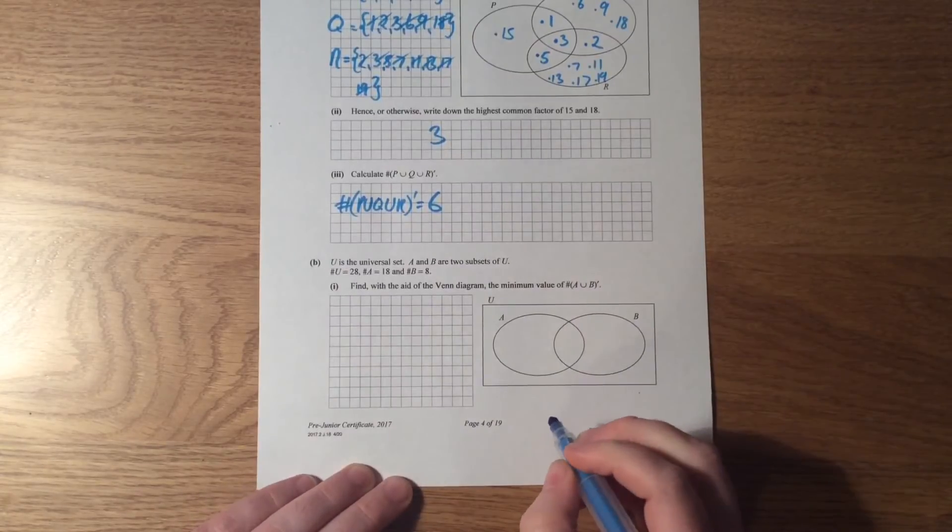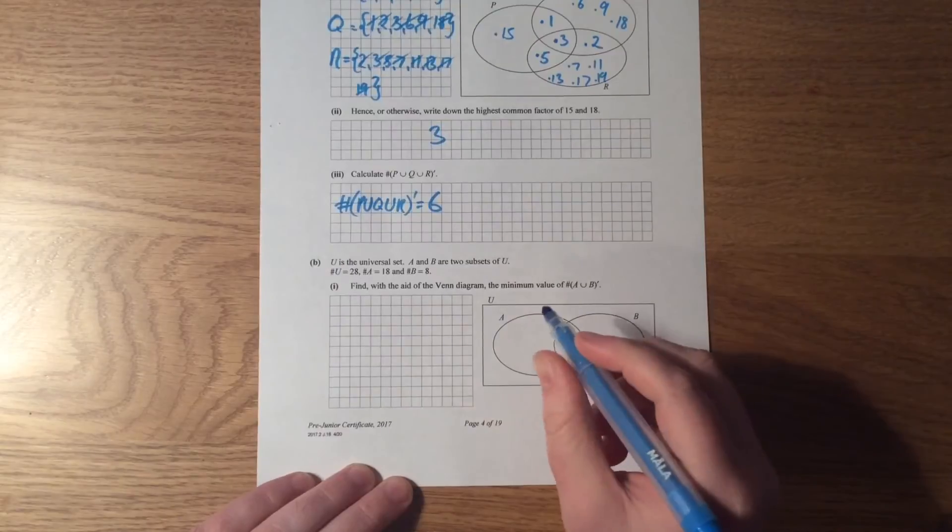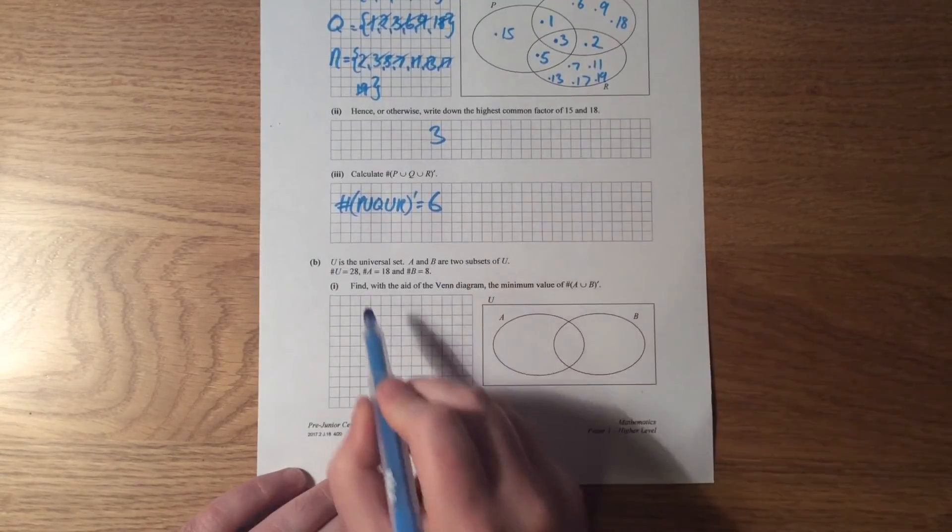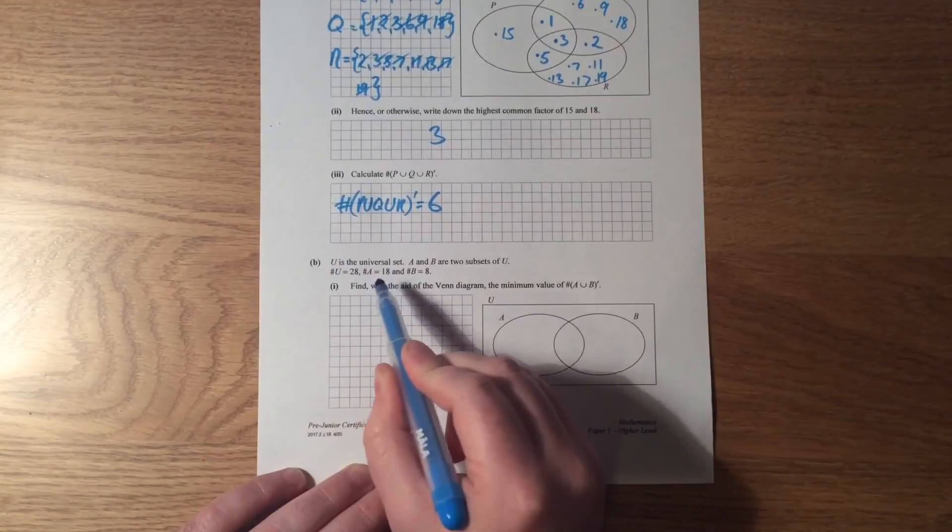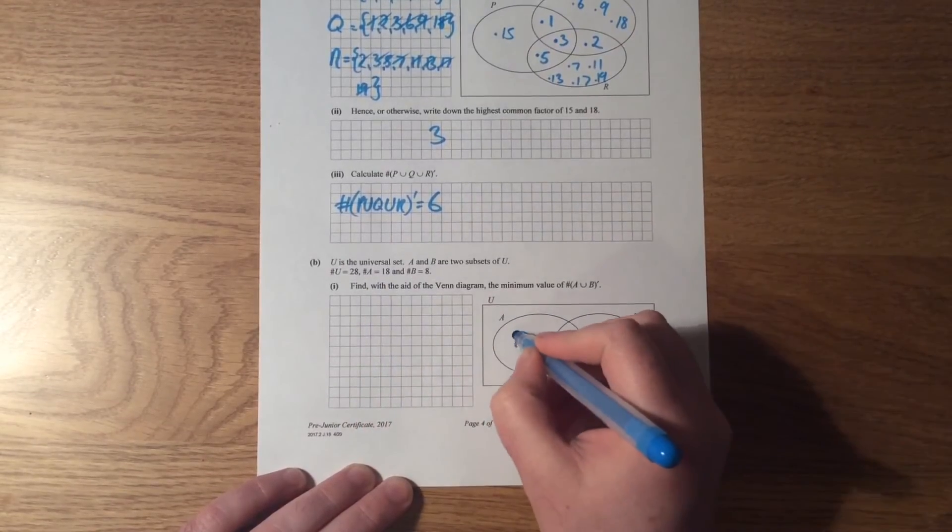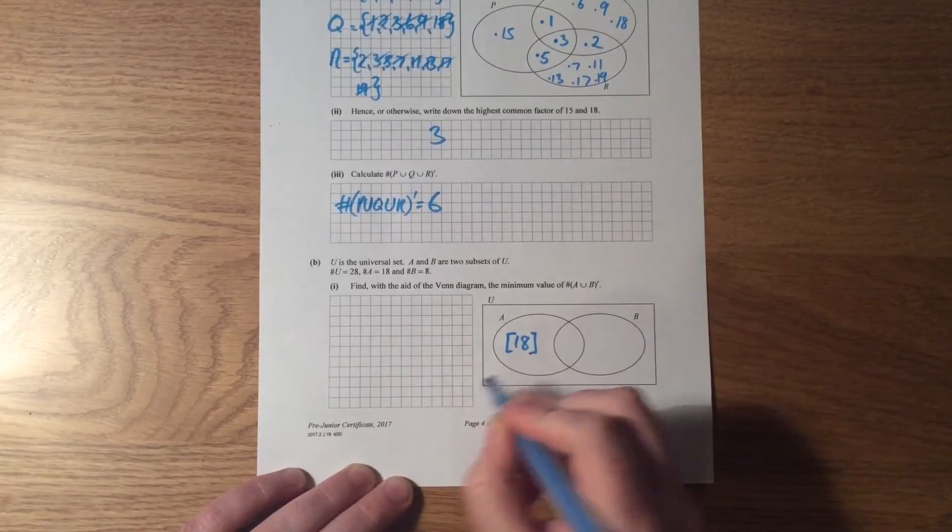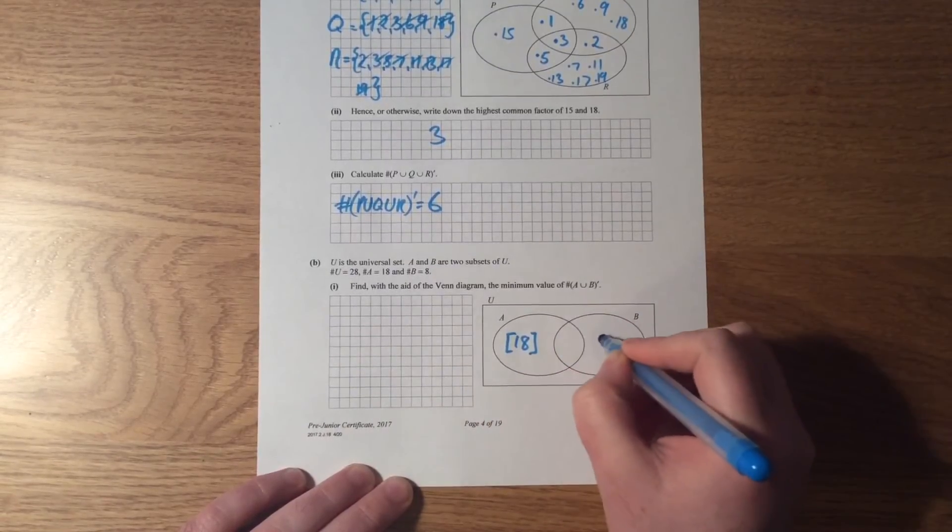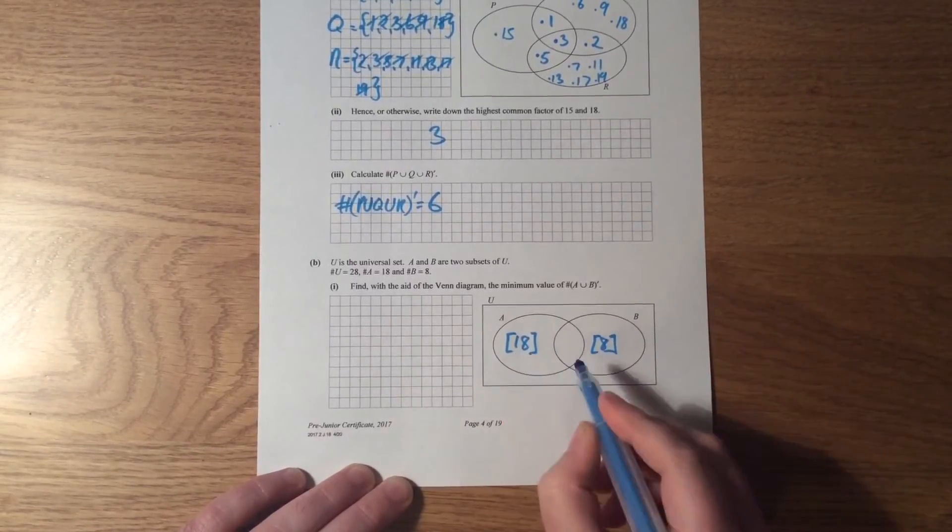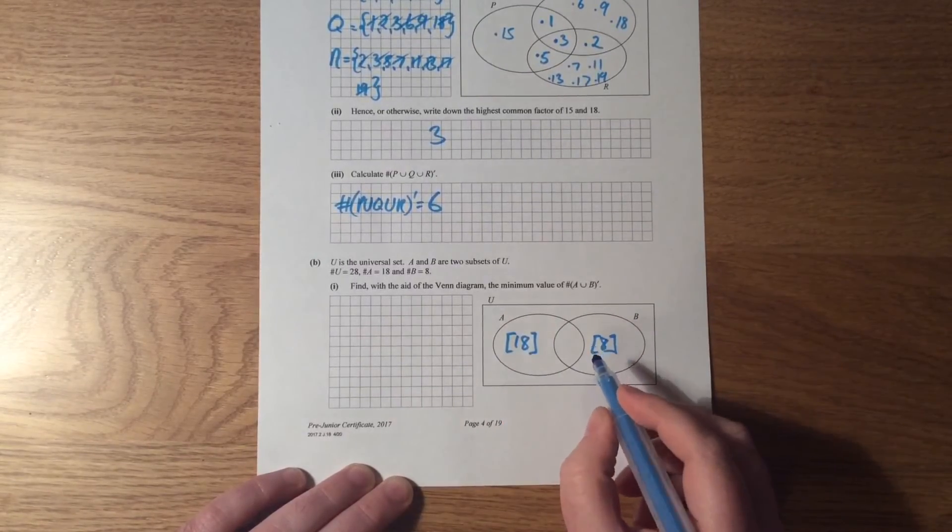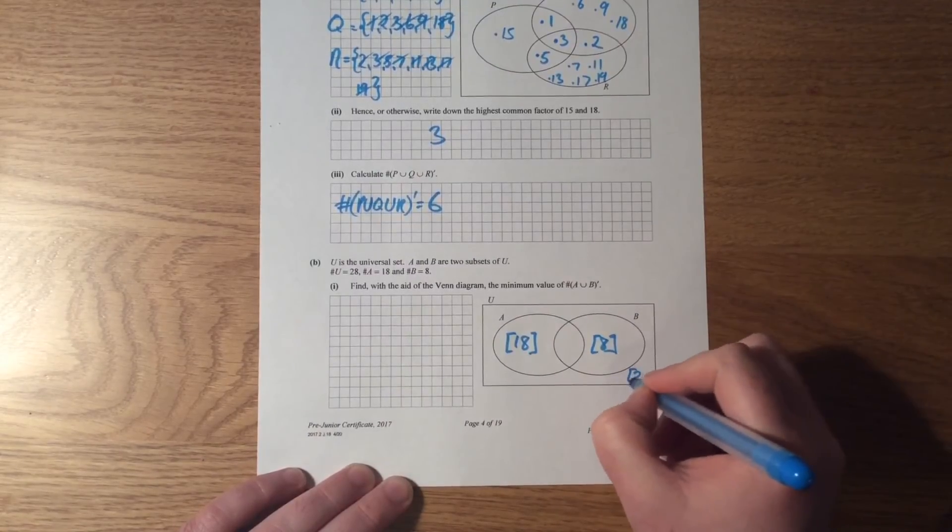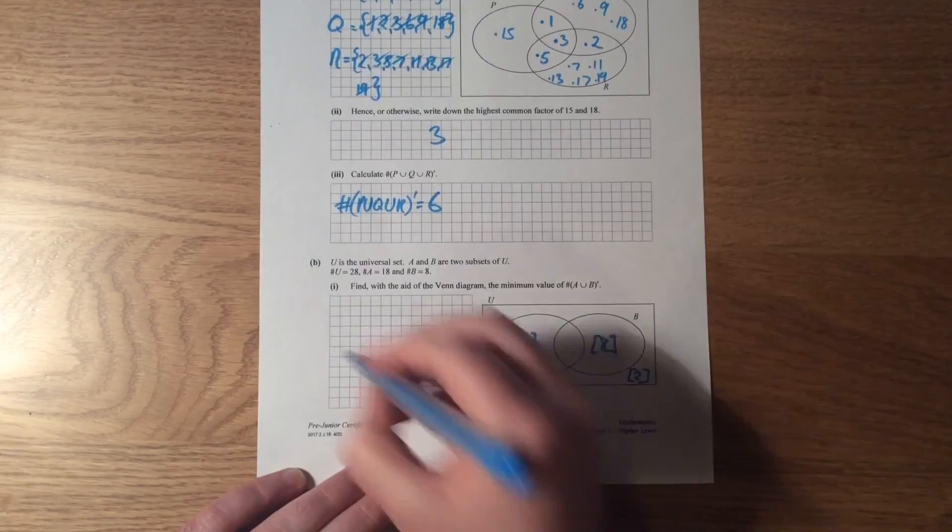Okay, find with the aid of a Venn diagram the minimum value of A union B complement. So what's the minimum value that can be outside the two circles? And the best way to look at it is to imagine if—right, okay—so A has to equal 18. So let's say all values there are 18, all right? And let's say that they don't share anything at all, which means that there are 8 elements here, which means I have a total of 26, which means that there has to be 2 left outside. Okay, so minimum value is equal to 2.